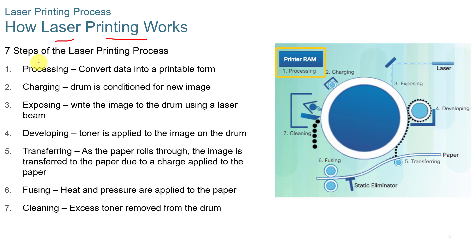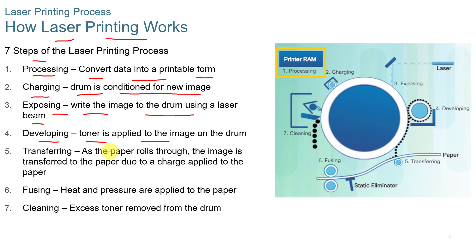How a laser printer works involves seven steps. First, processing converts the data into a printable form. Then charging conditions the drum for a new image. Next, exposing writes the image to the drum using a laser beam. Then developing applies toner to the image. Transferring moves the image to the paper as it rolls through. Fusing applies heat and pressure to permanently bond the image onto the paper. Finally, cleaning removes excess toner from the drum.